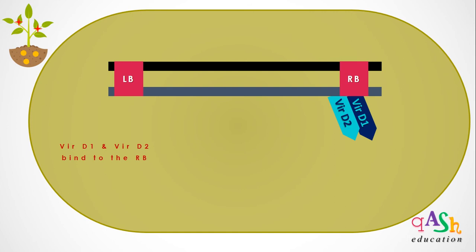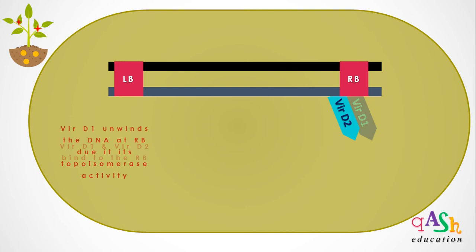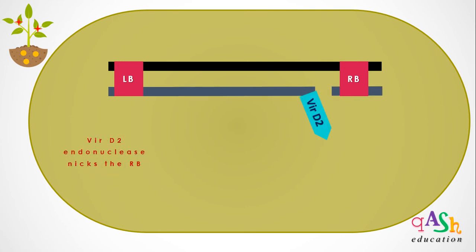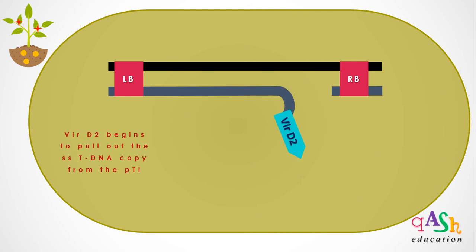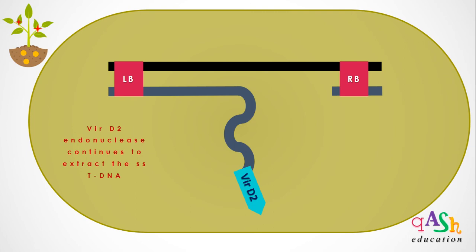VirD1 is a topoisomerase that unwinds the DNA helix at the right border and releases itself. VirD2 is an endonuclease that then nicks at the right border. After the right border is nicked, VirD2 begins to pull out the single-stranded T-DNA copy from the Ti plasmid.